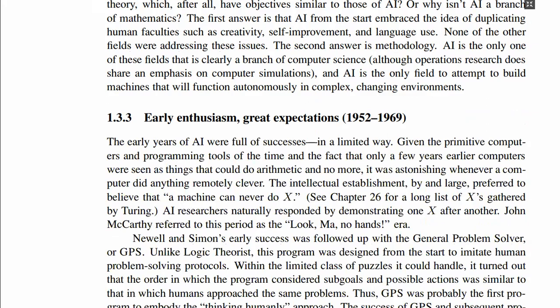The next time period, from 1952 to 1969, was the period when there was great enthusiasm about making machines that exhibit intelligence, and there were great expectations from this field. People were very optimistic. However, these early years when the field of artificial intelligence was under development, it was limited in many ways. There was great enthusiasm, but they were limited by some elements. At that time, in 1952 to 1969, computing was in its early stage — they didn't have the machines like we have today.